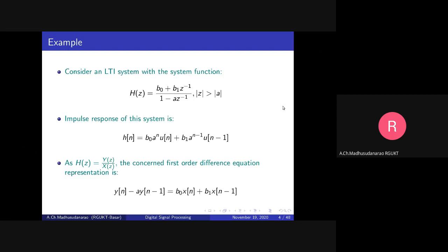Recall that the inverse z-transform of z^(-1) * X(z) is x(n-1), and the inverse z-transform of z^(-k) * X(z) is x(n-k), delayed by k samples. A delay of k samples corresponds to multiplication by z^(-k) in the z-domain.